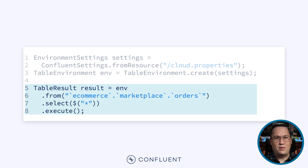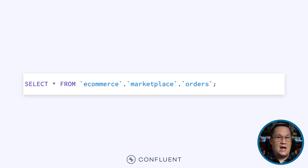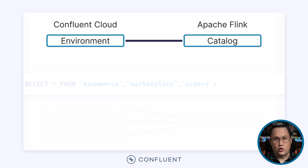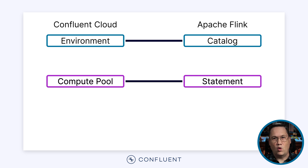There's one more resource I want to talk about. Here we see a very simple Table API query — it searches the orders and selects all fields. When we execute this, it produces a SQL statement that will be sent to Confluent Cloud. That statement might look like this. Confluent Cloud will execute the statement and return all records in the topic. However, that requires compute resources. Those resources have to be defined in the form of a compute pool. Each environment can contain one or more compute pools, and each statement will be assigned to use the resources from one of those pools. This assignment happens using one of the configuration settings we provided in the Cloud Properties file.